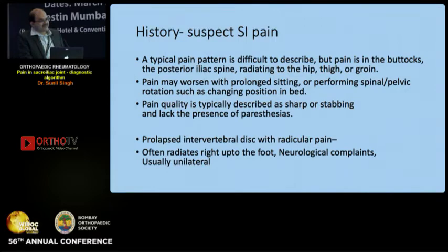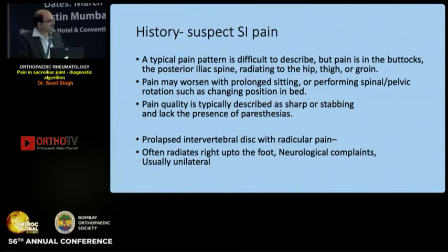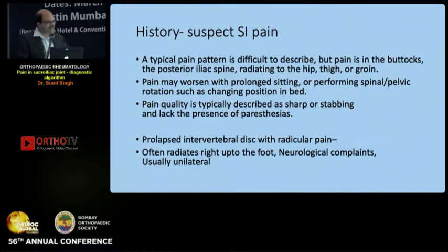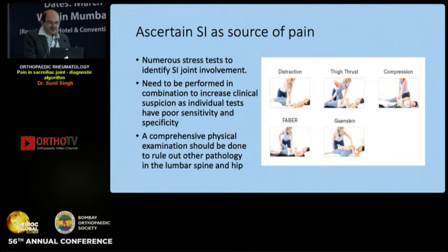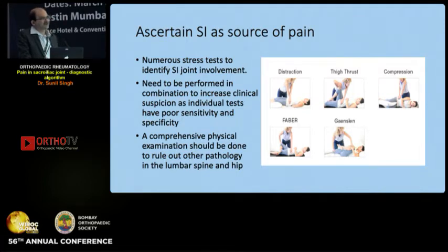The first step in the diagnostic algorithm is history. The most common mistake is taking SI joint pain as discogenic pain with radiculopathy. SI joint pain is typically described as pain in the buttock area radiating to the thigh, worsening with position changes in bed, and lacking paresthesias. In contrast, radiculopathy is often unilateral, radiates to the foot, and has neurological complaints. After history, one looks to ascertain the SI joint as the source of pain using numerous stress tests, and a comprehensive examination should rule out lumbar spine and hip pathology.